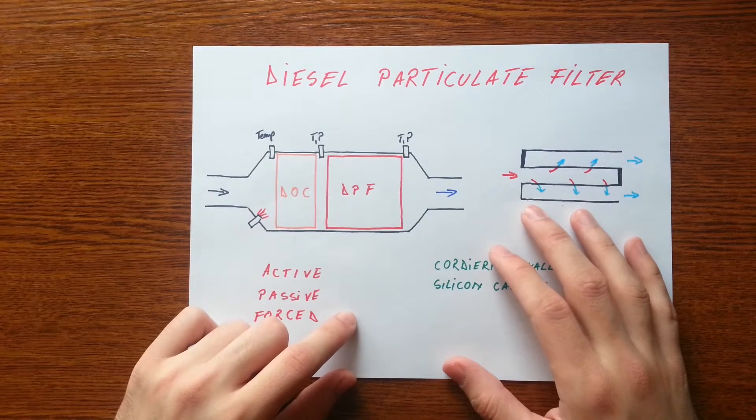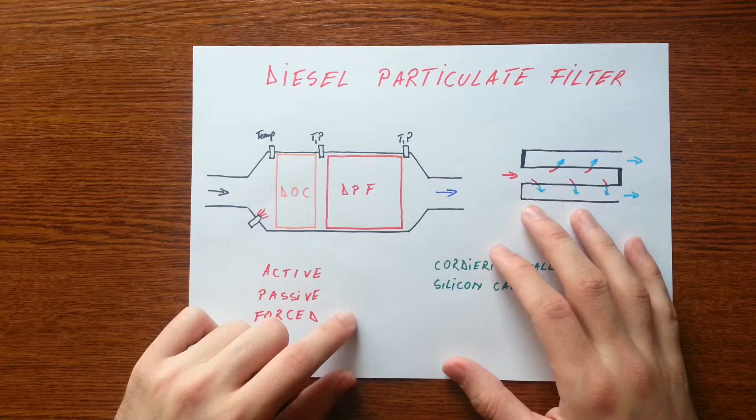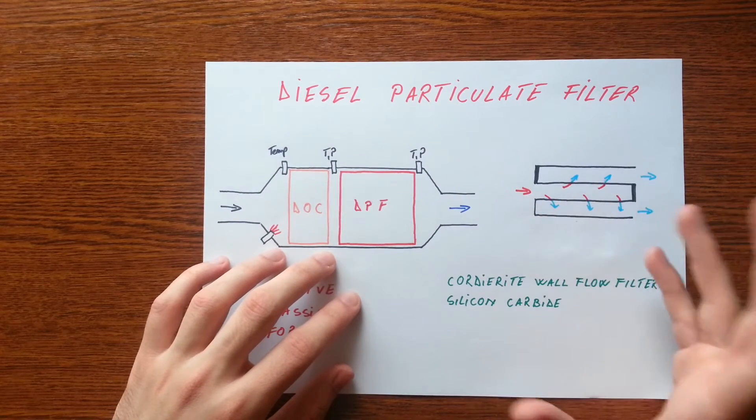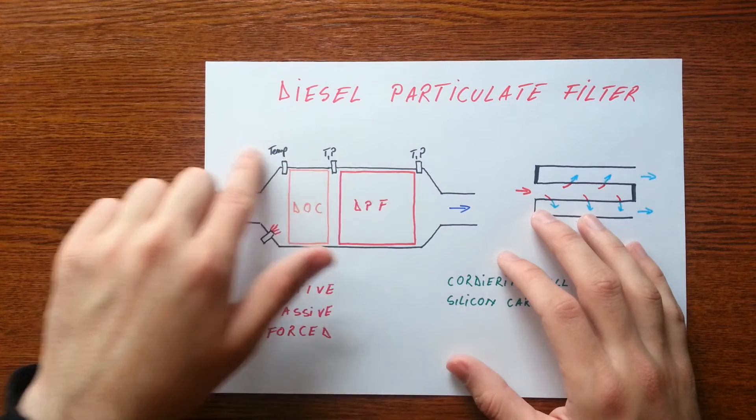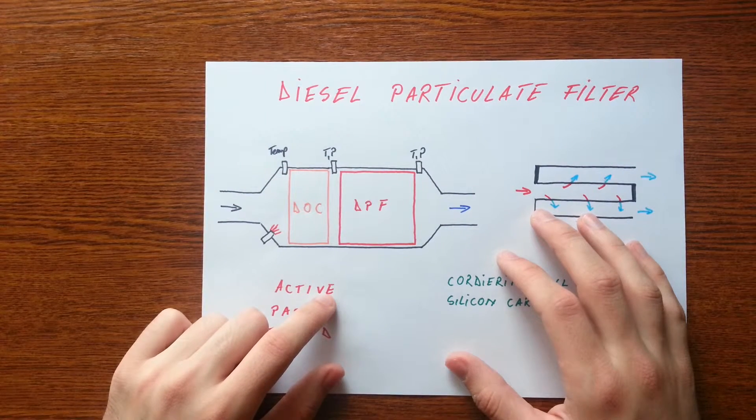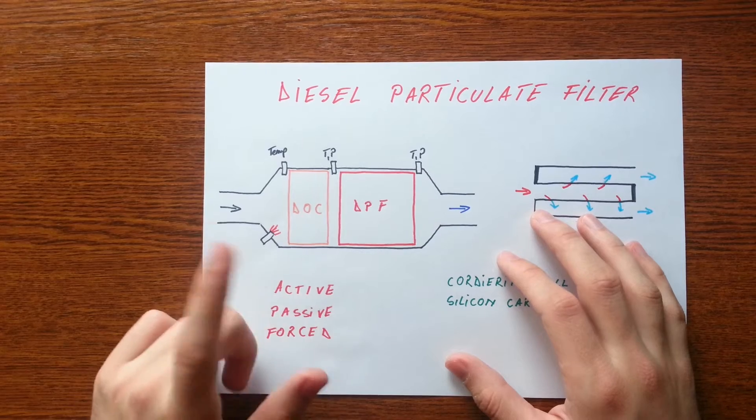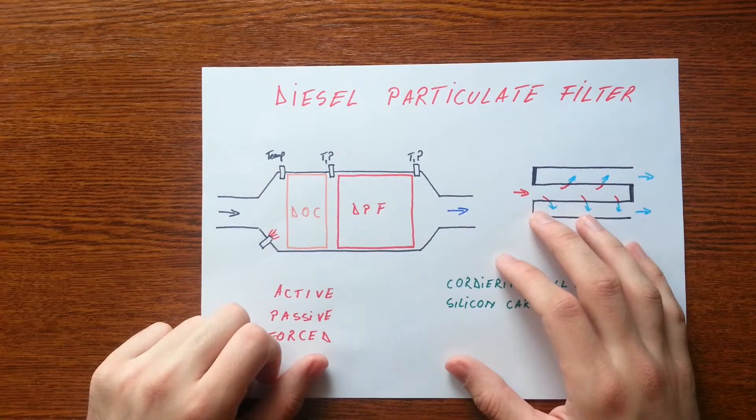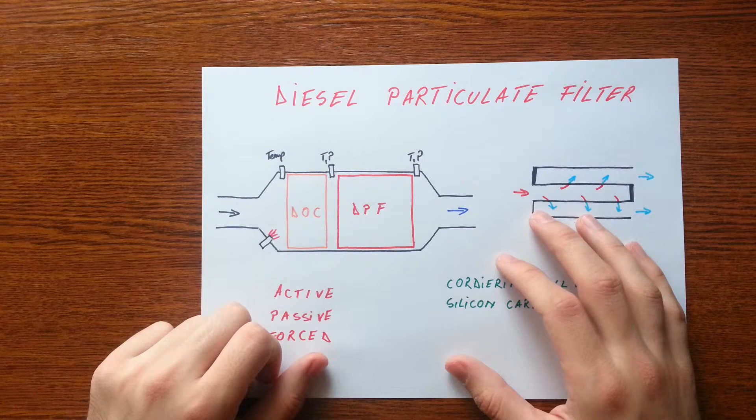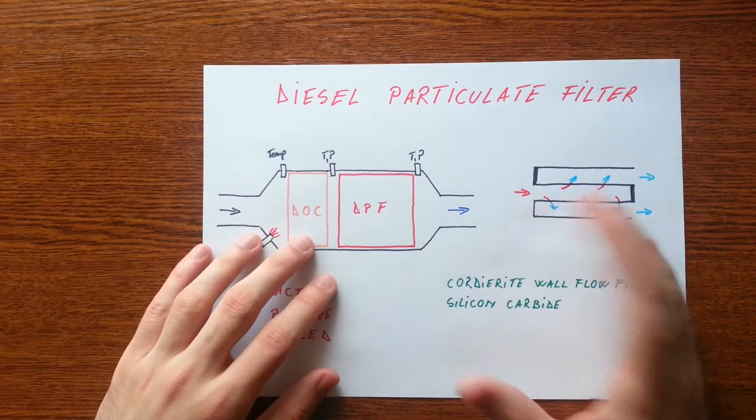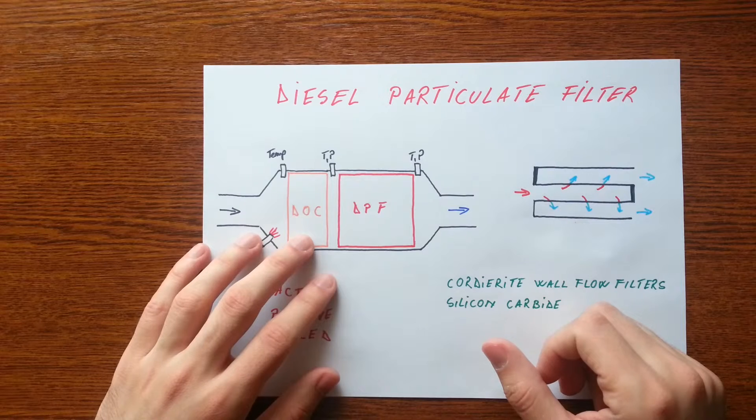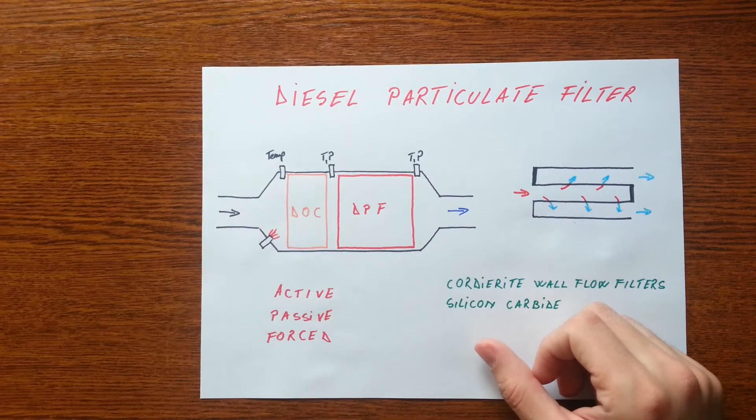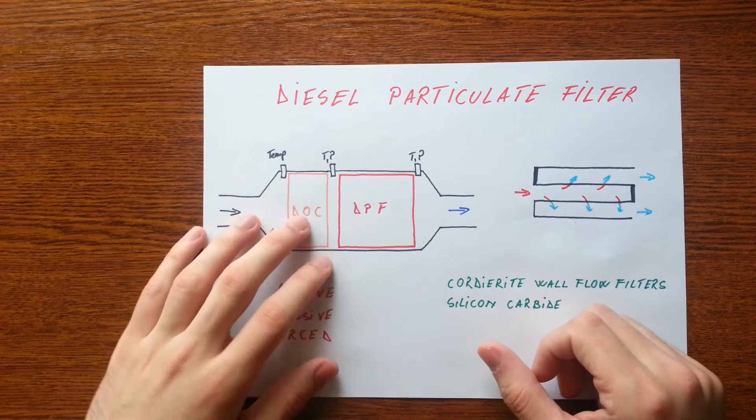The decision to regenerate the particle filter is taken by the injection computer based on information received from all the sensors. With the aid of the pressure sensor before and after the filter, the degree of loading of the filter is estimated. There's also a system with a single sensor mounted before the DPF that makes the difference between exhaust pressure and atmospheric pressure.